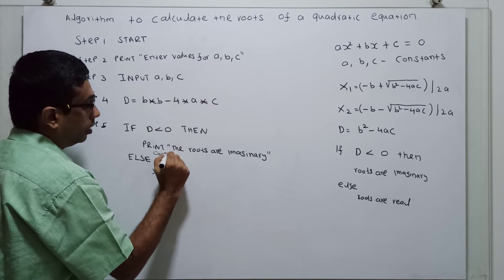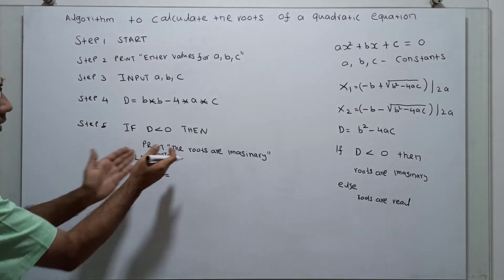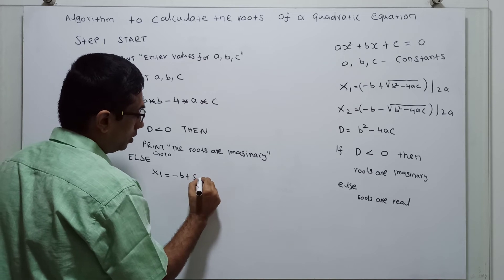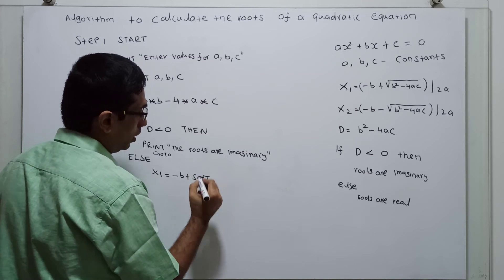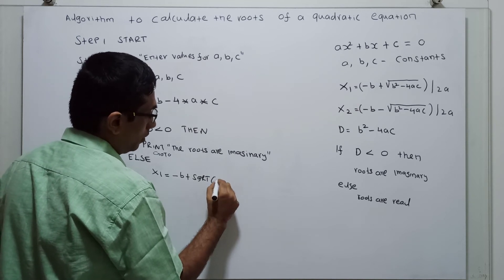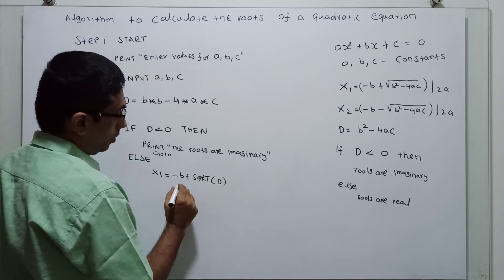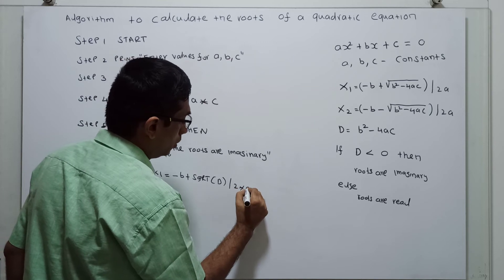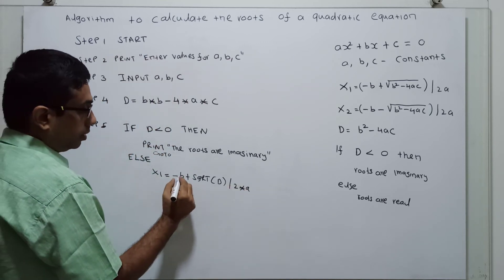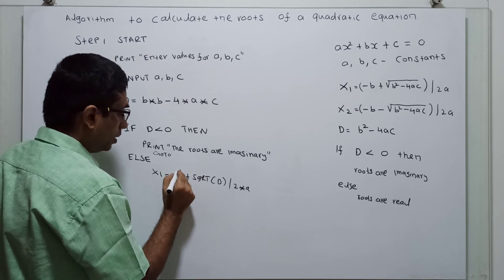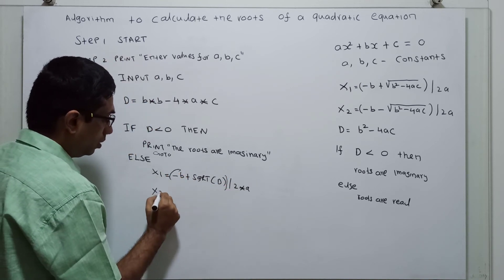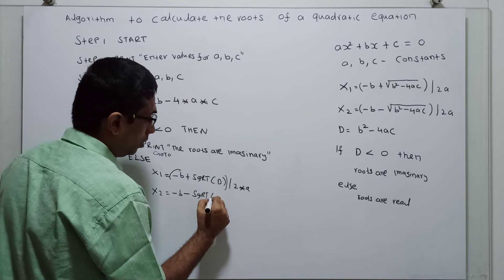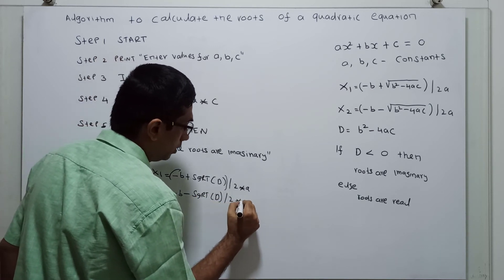Go to the last step. We don't know the last step, so we'll enter it later. x1 equal to minus b plus square root of d divided by 2 star a. x2 equal to minus b minus square root of d divided by 2 star a.